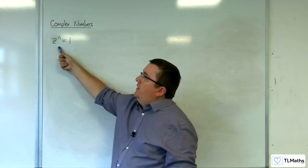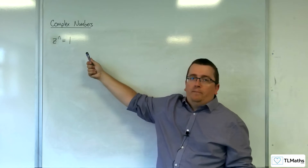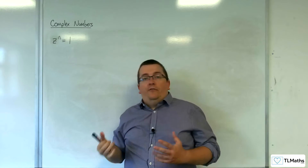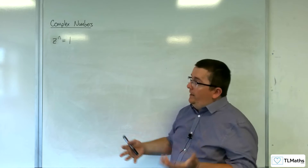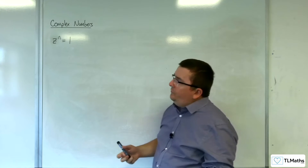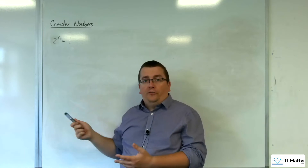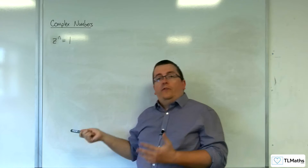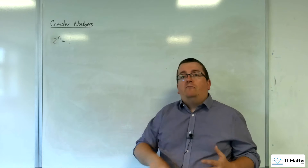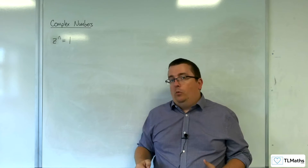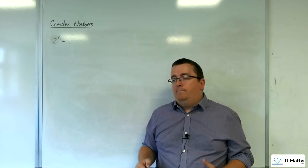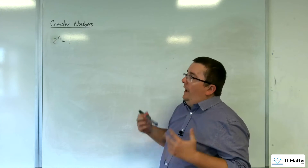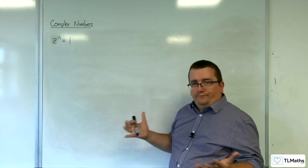We're going to start off by looking at z to the n equals 1. What you need to identify first, and be clear on, is that in order for z to the n to equal 1, z must have a modulus equal to 1. Otherwise, how could z to the n be equal to 1?